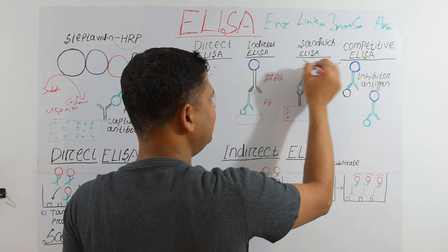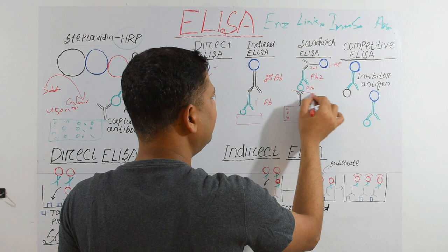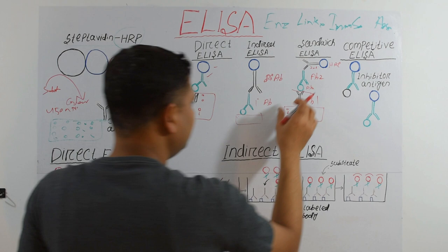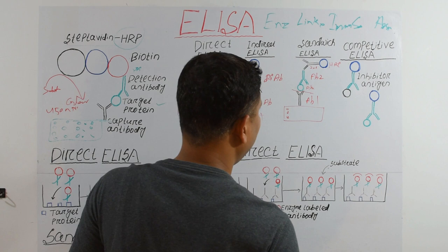The difference between Indirect and Sandwich ELISA is the capturing antibody. In Sandwich ELISA, an antibody is first captured onto the well, then antigen is added, then a second antibody, and then an HRP-tagged antibody — or HRP can be directly tagged to the second antibody.